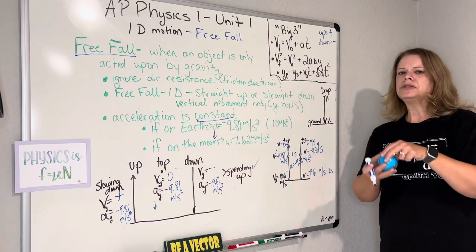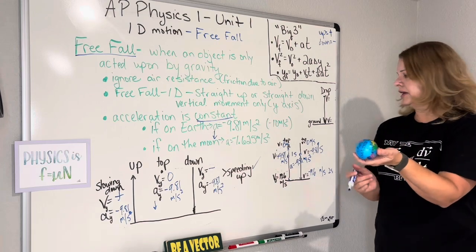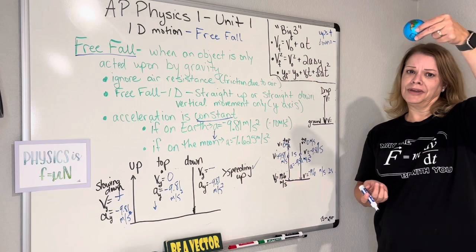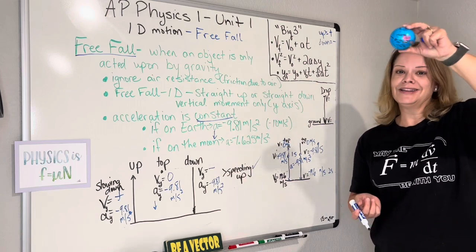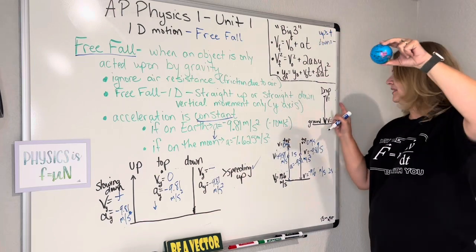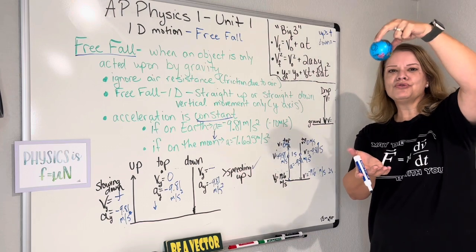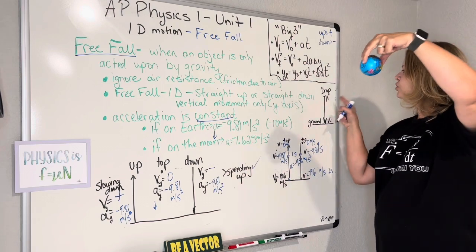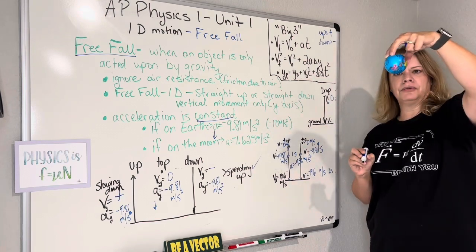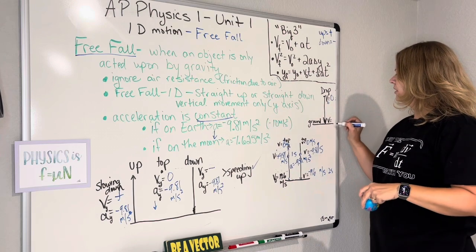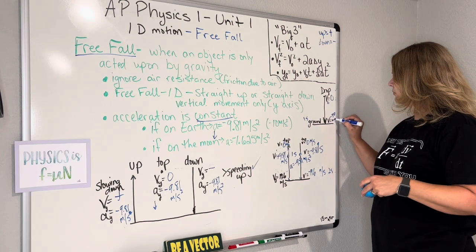When you drop a ball, your velocity always starts at zero — it's at rest, so your initial velocity is zero. Then it's going to speed up. If it falls for one second, it's at negative 9.81 meters per second.